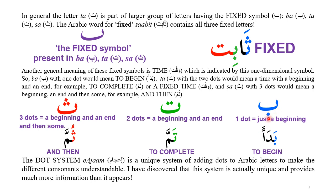Ba with a single dot means just the beginning of something — 'bada,' just a beginning. Ta with two dots means something beginning and ending, as seen in the word 'tamma.' And sa with three dots means a beginning, an end, and then 'summa' — representing three things, which is why it has three dots.